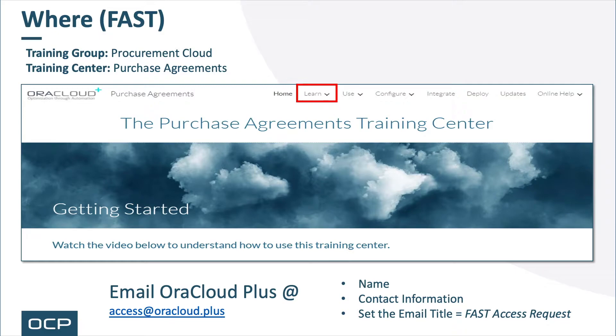To request access to FAST, email us at access@oracloud.plus. Please include your name and contact information in the body of the email, and set the title to FAST Access Request.